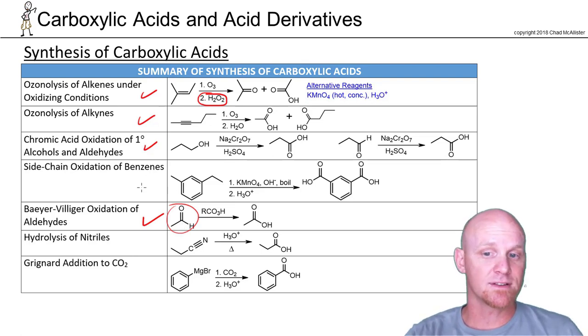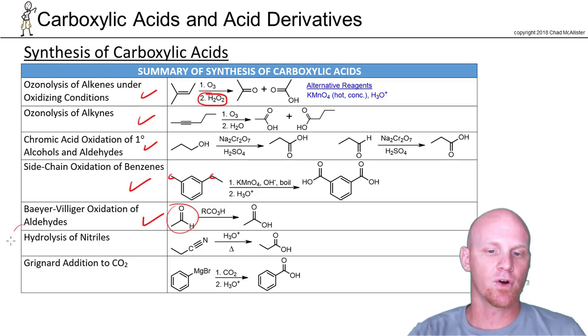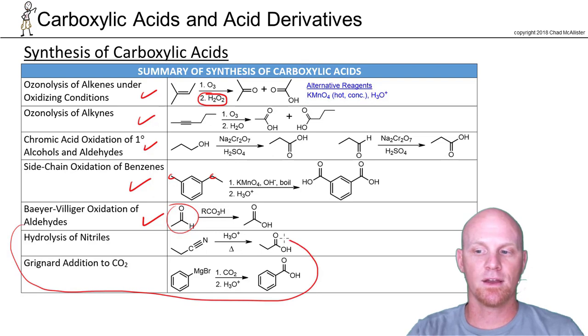More recently we've learned side chain oxidation of benzenes. You can oxidize the benzylic carbons as long as they have a hydrogen with potassium permanganate. Chromic acid turns out would work as well, FYI. These are all review. What I want to focus on now are these two right here, because these two are new to this chapter.